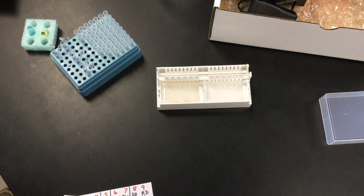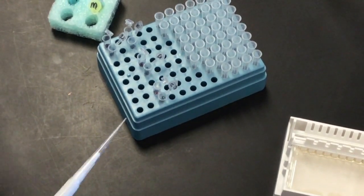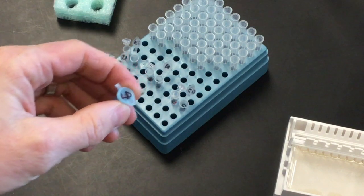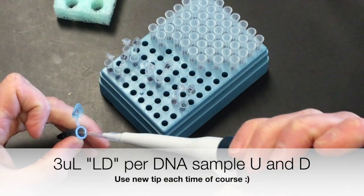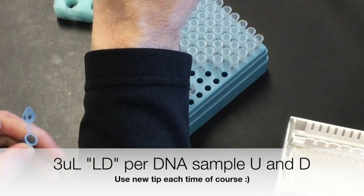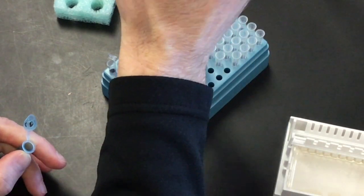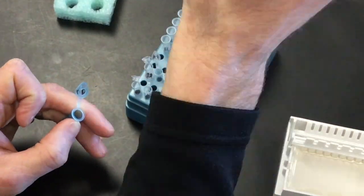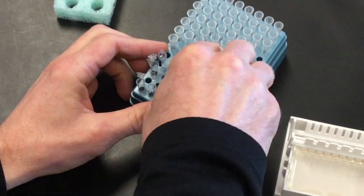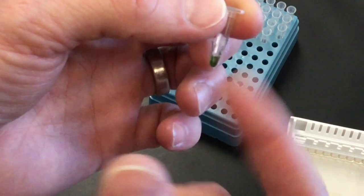So I'm going to use a clean tip each time. And I've got my tube sitting here in the rack, and I'm just going to grab the loading dye, and I'm going to pull three microliters and add it to each tube, one at a time. Get a new tip each time. Okay, so I added the loading dye to all of my tubes. Now I'm going to cap them. And I'm going to mix the contents, making sure that the loading dye mixes with the sample.